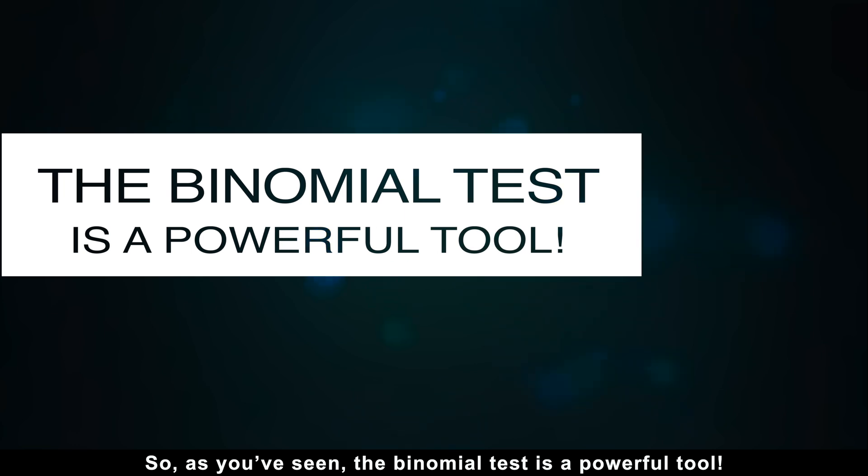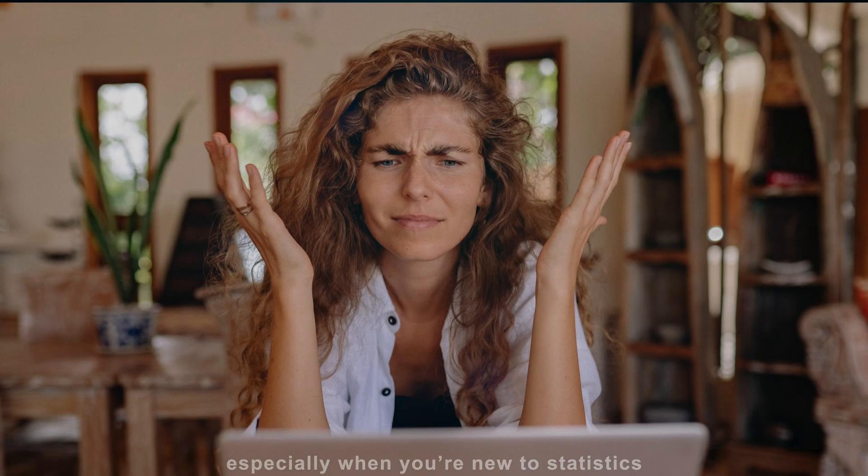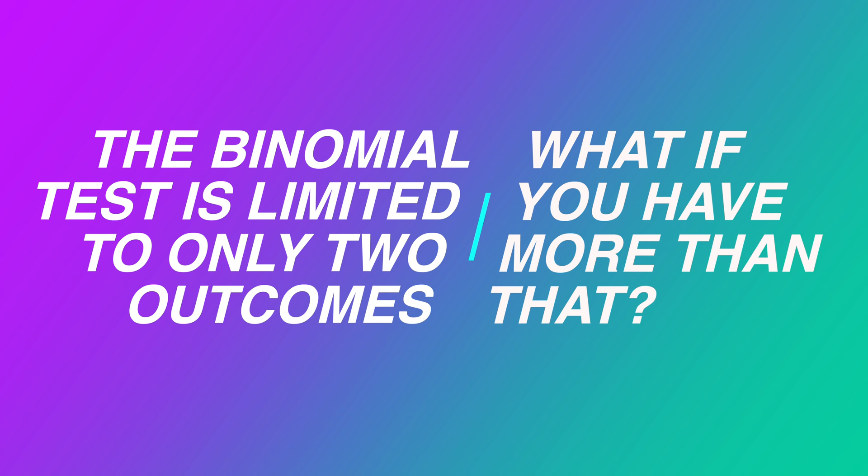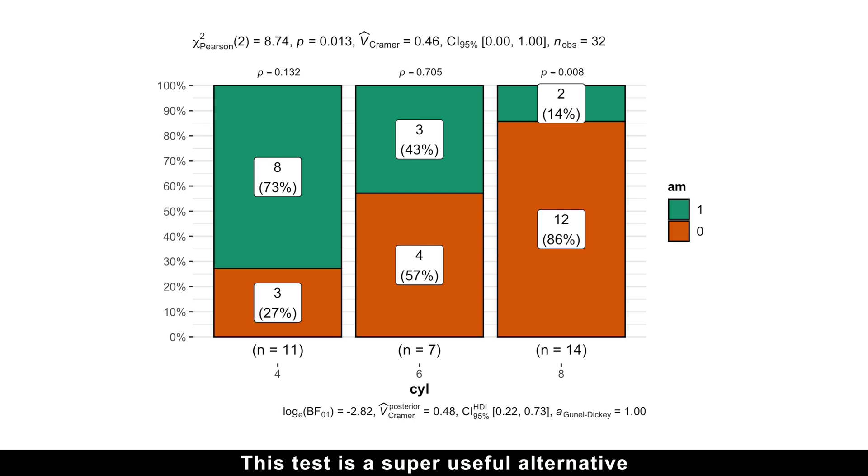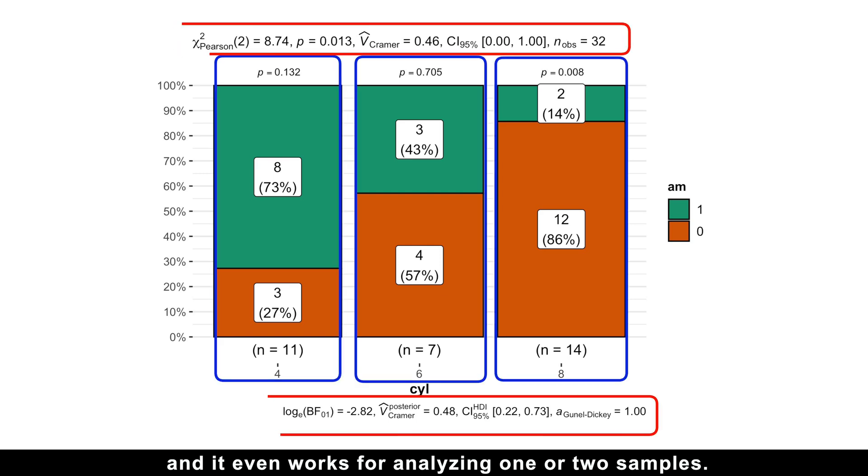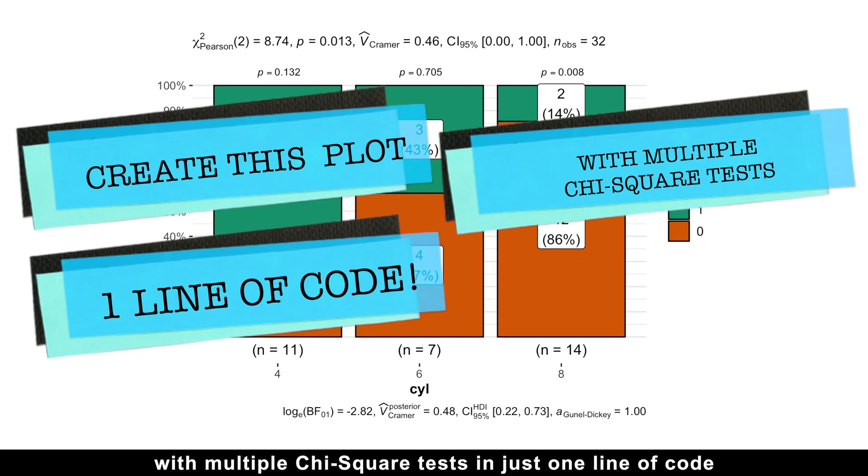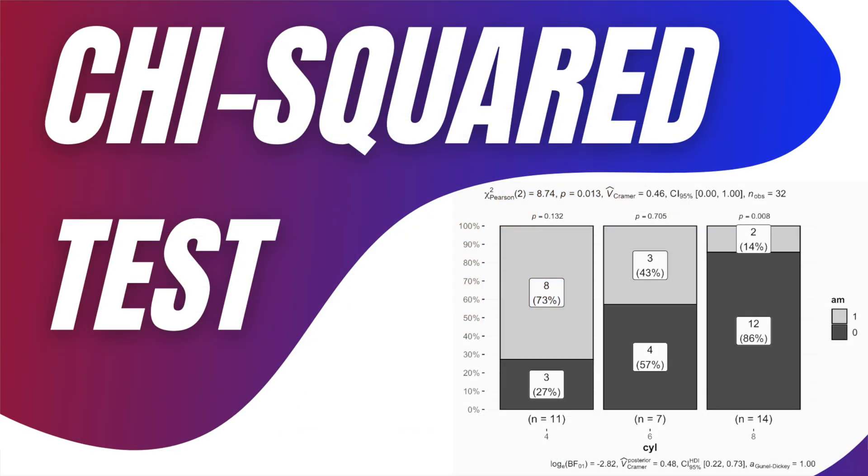It works great for situations with yes-no or success-failure outcomes. Especially when you are new to statistics and don't feel comfortable with more complex methods like logistic regression. But here's the catch. The binomial test is limited to only two outcomes. What if you have more than that? That's where the chi-square test comes in. This test is a super useful alternative because it can handle multiple outcomes with ease and it even works for analyzing one or two samples. And if you want to see how to create this plot with multiple chi-square tests in just one line of code and learn how to interpret all these results in only 5 minutes, just watch this video next.